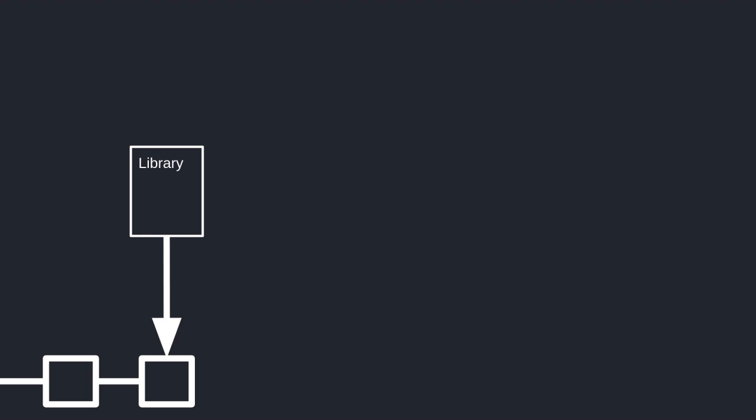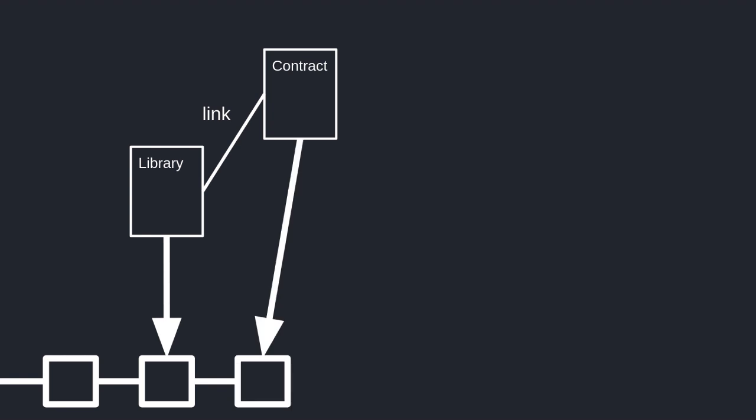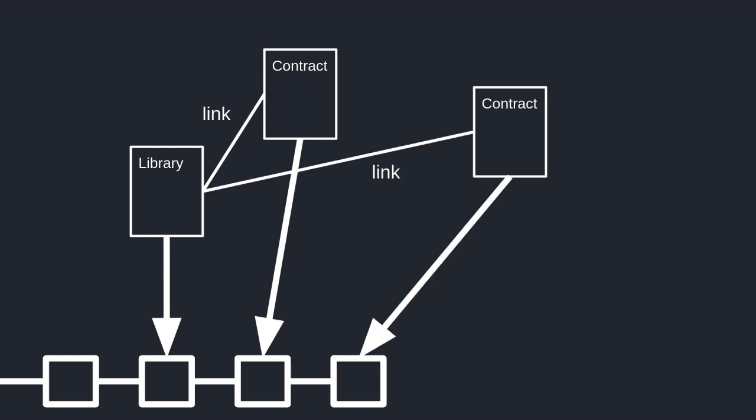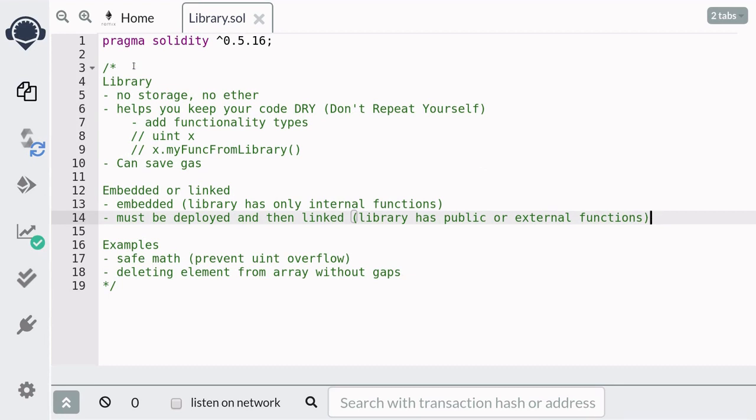Another benefit of using a library is that it can save gas. The way this is done is that you first deploy the library, and if you have a contract that is going to use this library, you link the contract to the already deployed library during compilation, then deploy the contract. If you have another contract that also uses this library, you repeat the same process. By doing so, you only deploy the library once instead of deploying it multiple times for each contract, and that's how using a library can save gas.